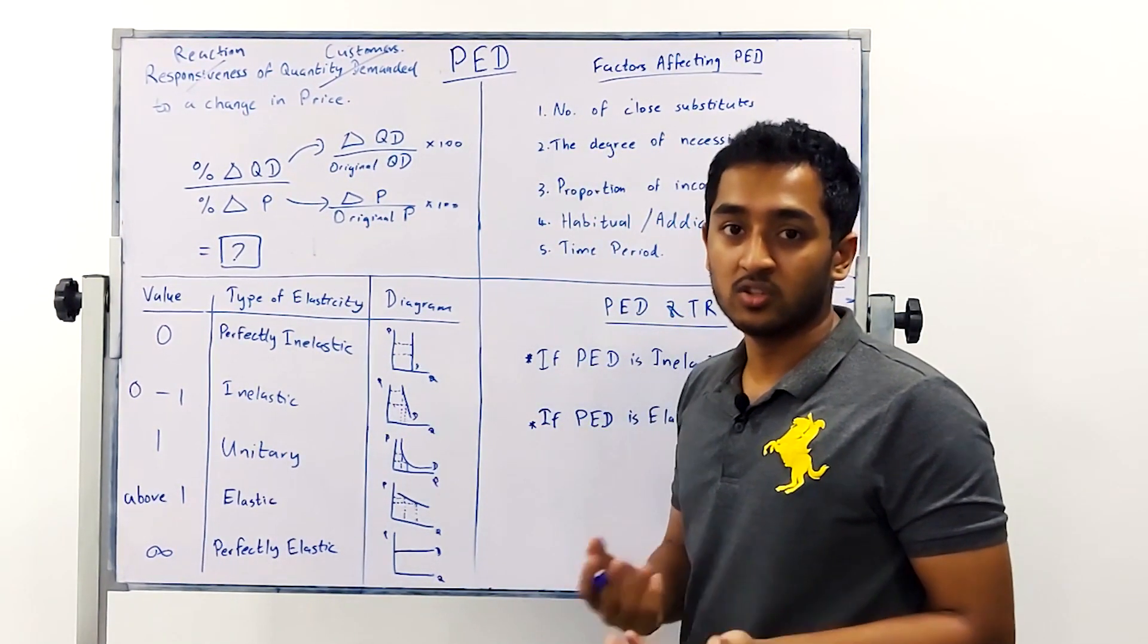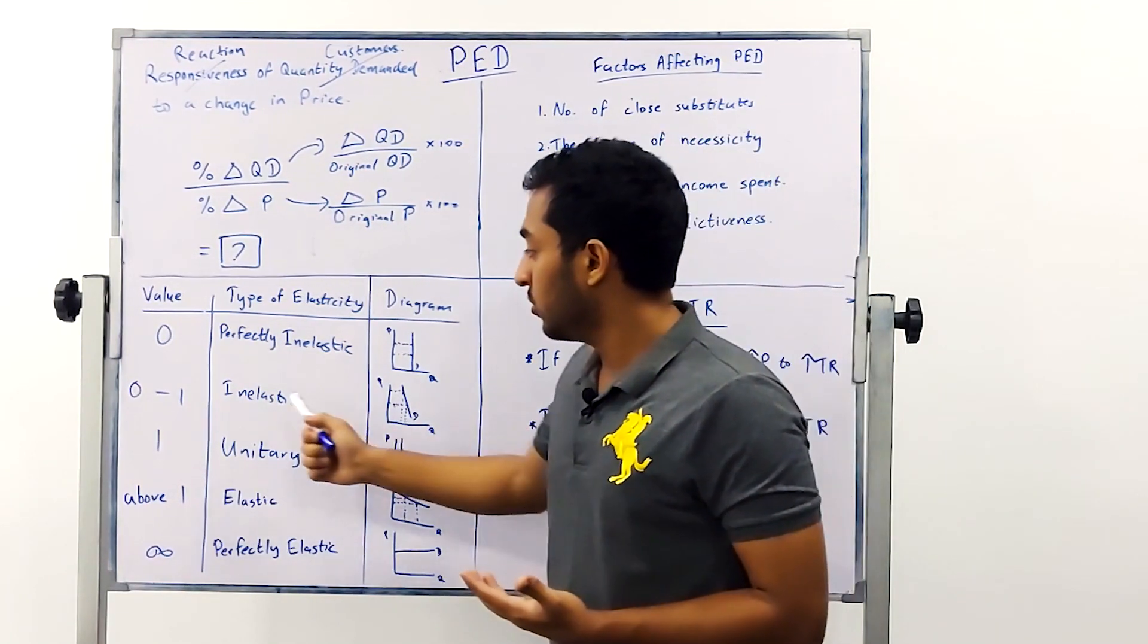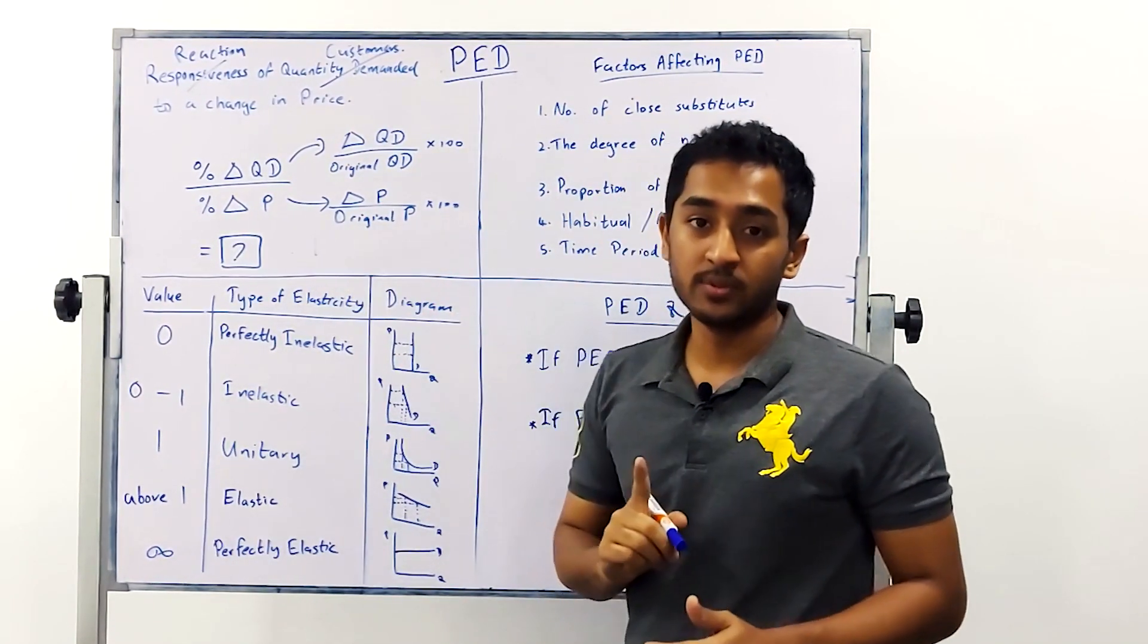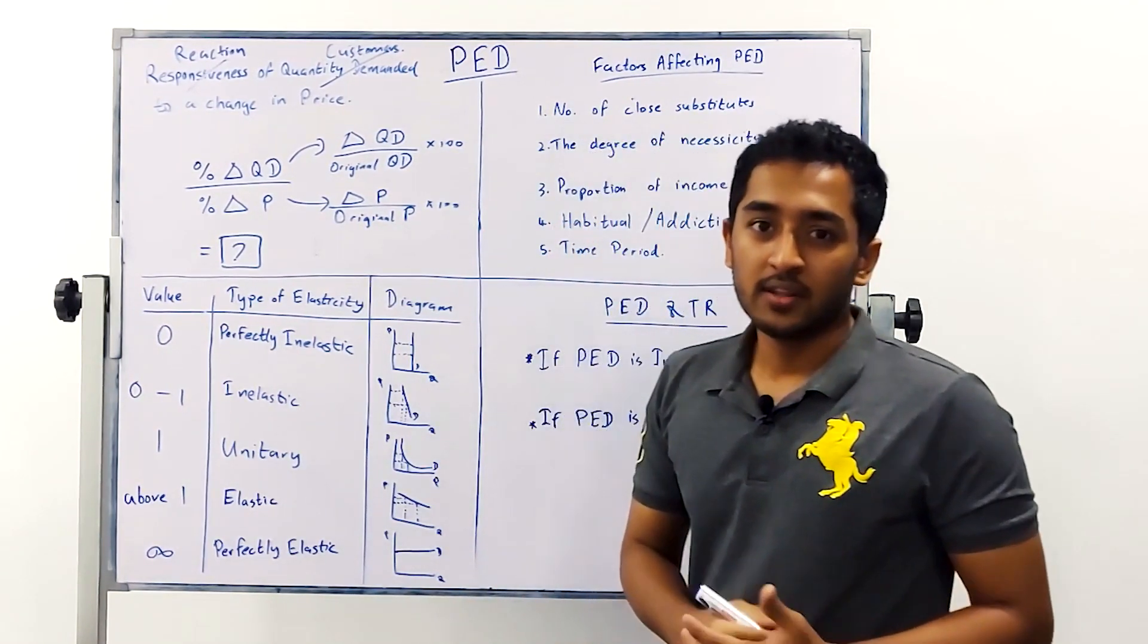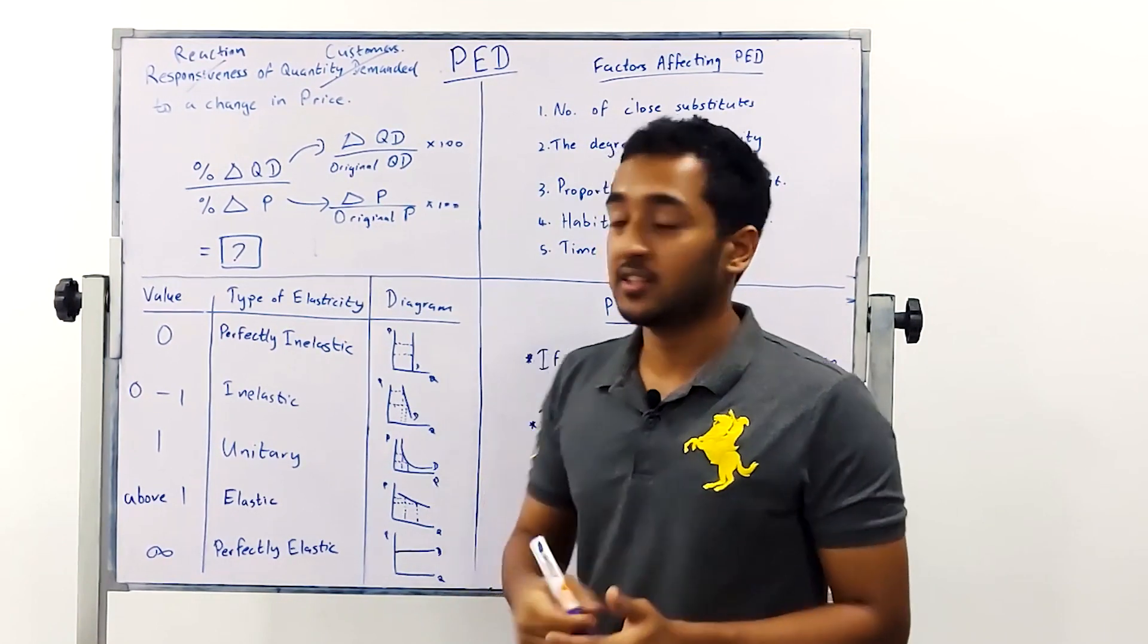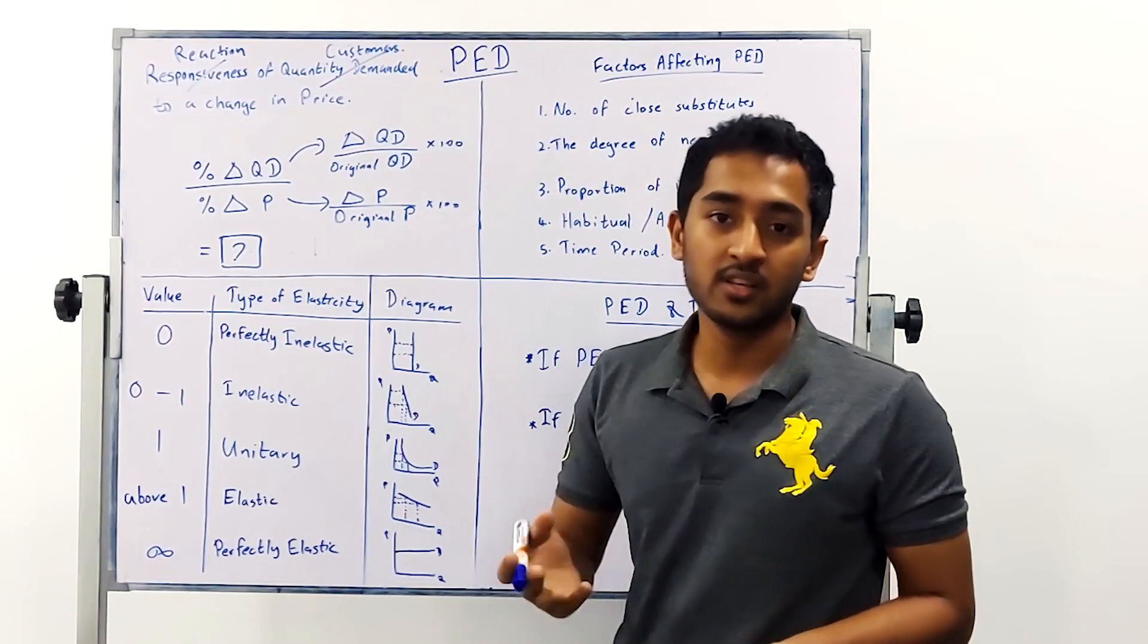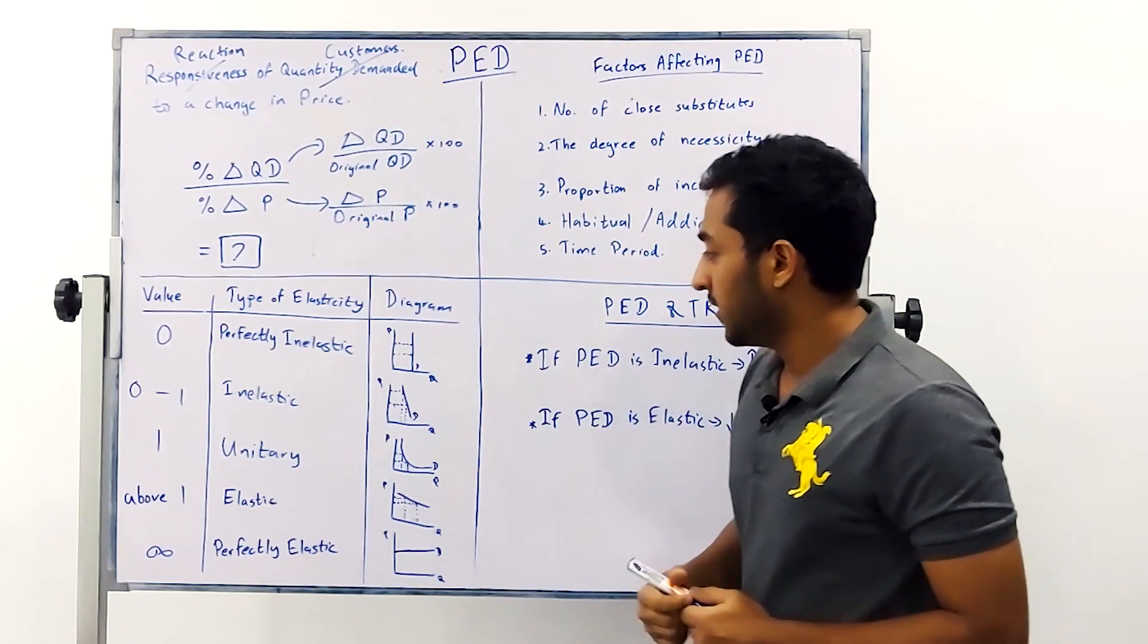If you were in between zero and one you will be considered inelastic which means that if you raise your price by one percent less than one percent of customers leave you. These are for products that are maybe necessities which we will discuss in the next section. For an example of this is a cigarette. So no matter how much your prices rise a smaller proportion of customers leave.